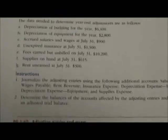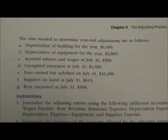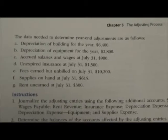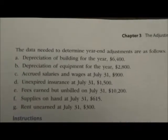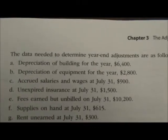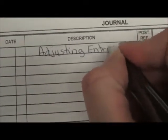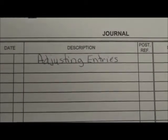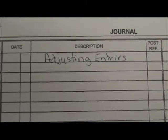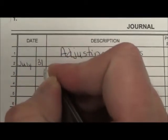Let's start by journalizing our adjusting entries. We're going to come up to the top of page 145 and start with the first one, letter A: Depreciation of the building for the year, $6,400. We're going to come over to our journal page. The first thing we're going to do is write the words 'Adjusting Entries' centered at the top of our journal page, so we know these are not just regular everyday journal entries. Our book is using the date of July 31st, 2014.